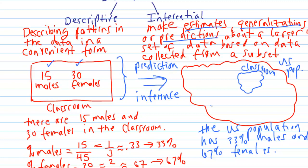How can we make this inference better? Well, we can increase the number of students in our classroom. The information we've collected here is an example of a sample, and over here on the right, the thing we're trying to say something about is referred to as a population. So we're using information collected from the classroom sample to make a statement about the population, and in this case the inference is weak.